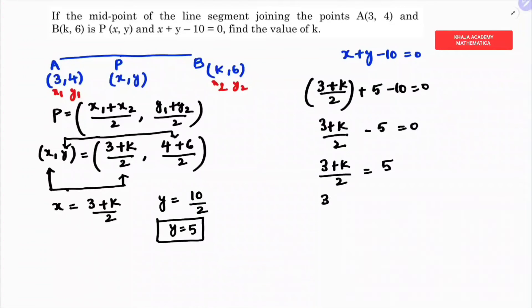So 3 + k = 2 × 5 = 10, therefore k = 10 - 3. The value of k is 7.